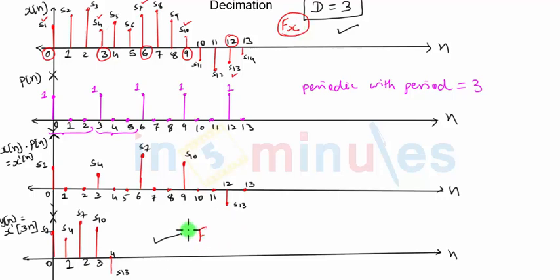Please note that the original sample rate was fx. The sample rate of this new signal y of n is fy, and fy is nothing but fx divided by 3. The original sample rate is divided by 3, and this exactly is the process of decimation. So let's now go through the frequency domain calculations. We will do a small mathematical analysis.